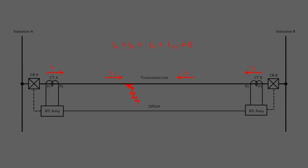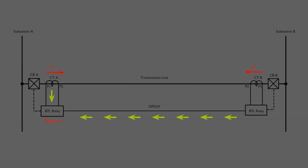Now come to the differential relays. Relay A receives the current signal I_A from CTA. For the differential mechanism of the relay, it needs the current from CTB also. Relay B receives the current signal I_B from CTB. This signal is converted to an optical signal and transmitted to relay A through OPGW. At relay A, the optical signal is reconverted for comparison with the I_A signal. If I_A plus I_B is not equal to zero, the relay will actuate and will send a trip signal to circuit breaker A. Similarly, relay B receives the current signal I_B from CTB and sends I_B to relay A through the OPGW. On the other hand, relay B receives the I_A signal from relay A via OPGW — the optical ground wire connected via peaks of the transmission towers.